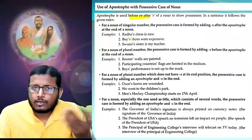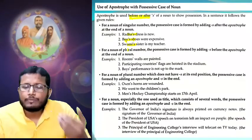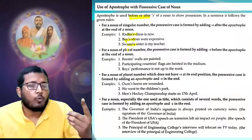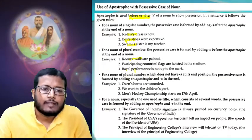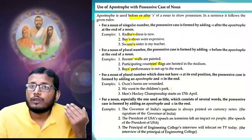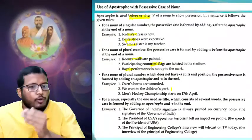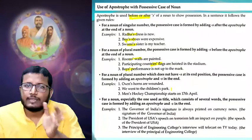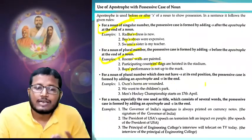For example: Radha's, Swami's — these are singular. Number two: rooms', countries', boys' — these three words are examples of plural nouns. For that reason you can see 'rooms'' — only apostrophe, no extra S. 'Countries'' — only comma. 'Boys'' — plural with S-ending, so only comma. This is completed.